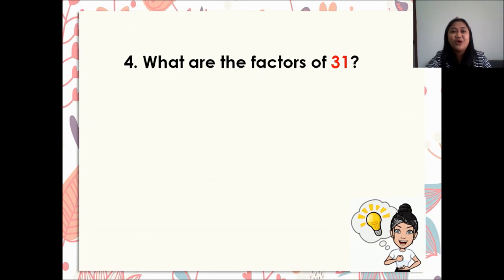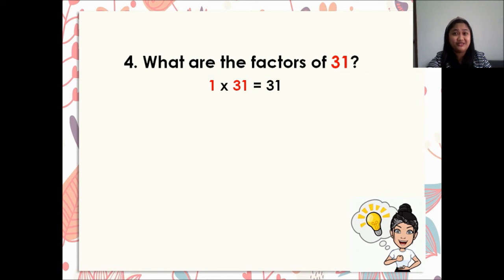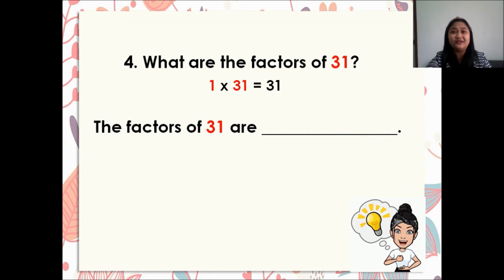Next, number 4: what are the factors of 31? We have 1 times 31 is equal to 31. Therefore, the factors of 31 are 1 and 31.